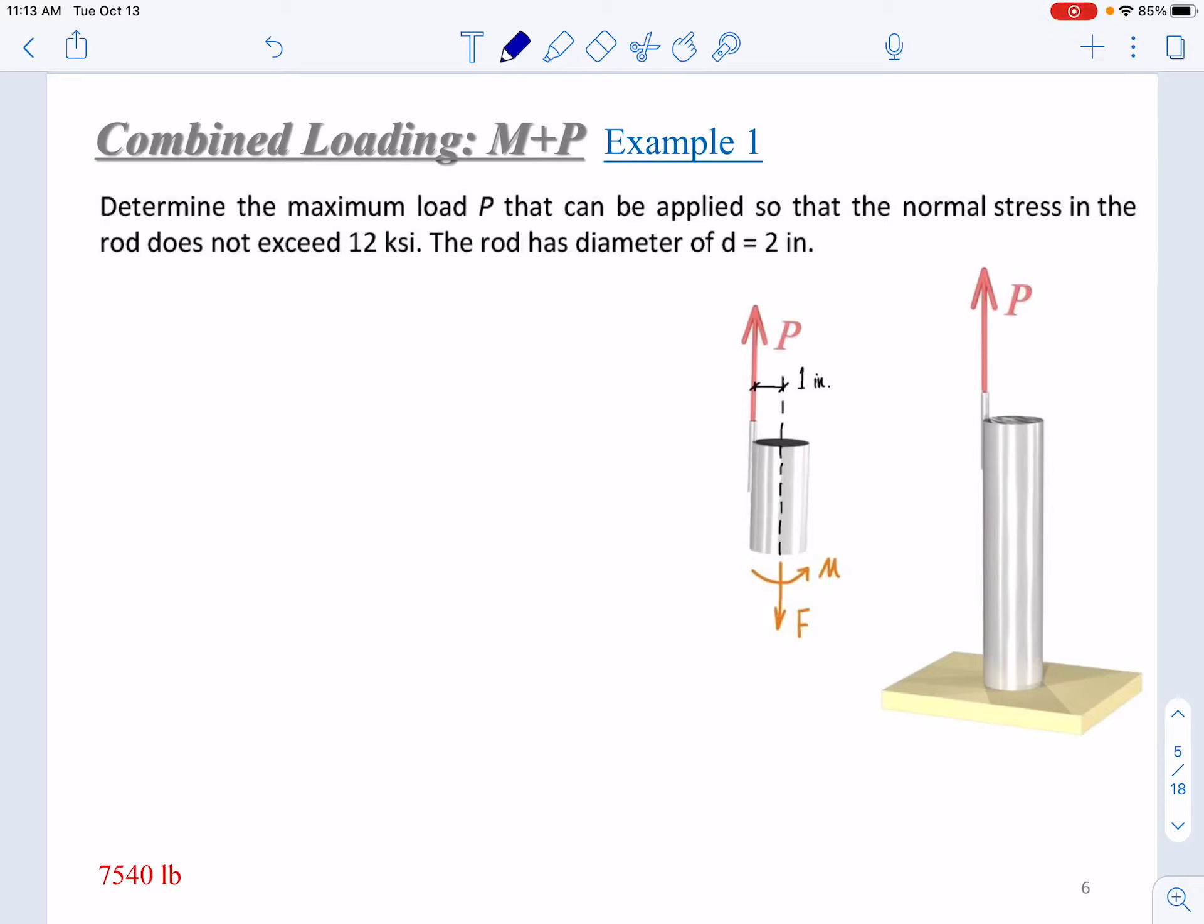In the first example, we have a rod subjected to eccentric loading P. Determine the maximum load P that can be applied so that the normal stress in this rod doesn't exceed 12 ksi. The rod has a diameter of 2 inches.